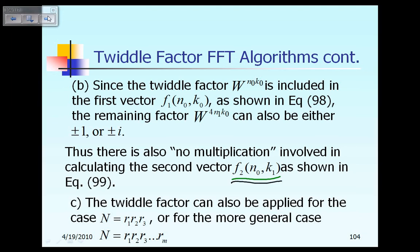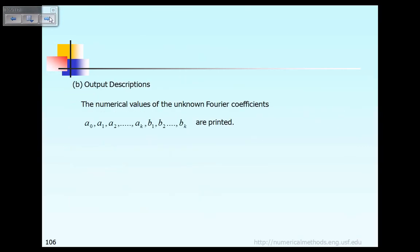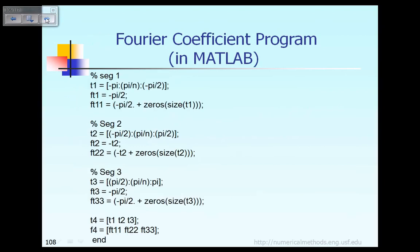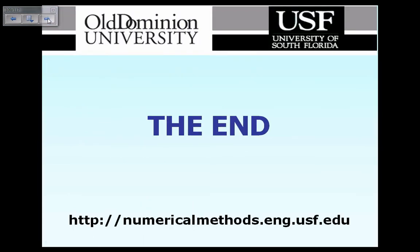That is the idea of the so-called twiddle factor. We can take advantage of the twiddle factor to further speed up the computational process. This idea can be generalized to capital N equal to the product of three integers instead of just two, or further generalized to the product of M integers. And that is the end of this chapter and this lecture.